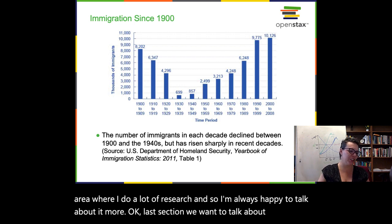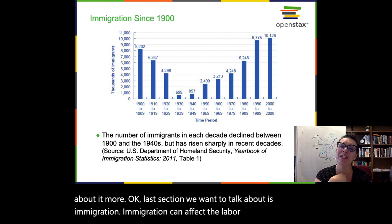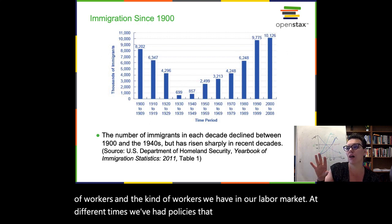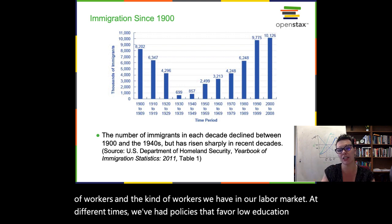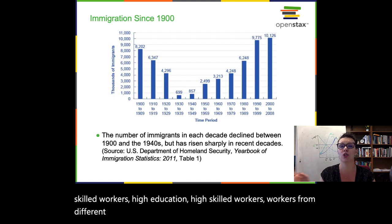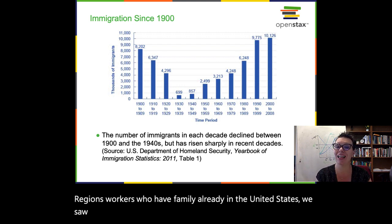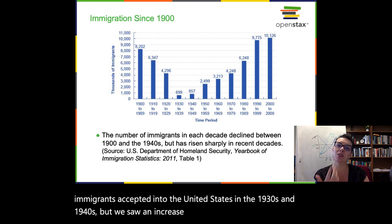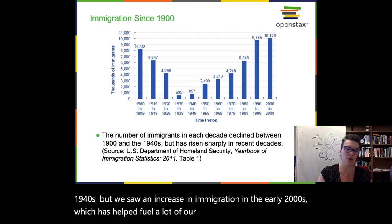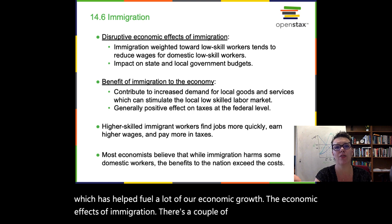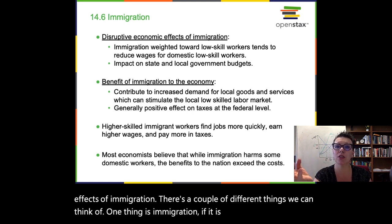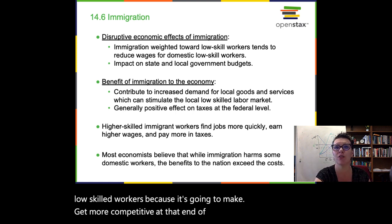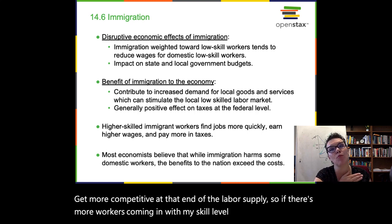The last section we want to talk about is immigration. Immigration can affect the labor supply because it's going to alter the quantity and kind of workers we have in our labor market. At different times, we've had policies that favor low-education, low-skilled workers, high-education, high-skilled workers, workers from different regions, or workers who have family already in the United States. We saw a sharp decline in immigrants accepted into the US in the 1930s and 1940s, but an increase in the early 2000s that helped fuel economic growth. If immigration is weighted towards low-skilled workers, it's going to tend to reduce wages for domestic low-skilled workers by making that end of the labor supply more competitive.